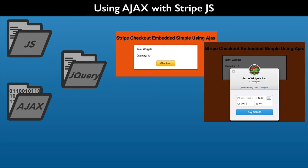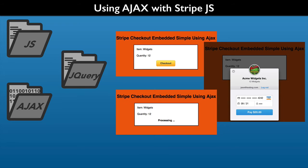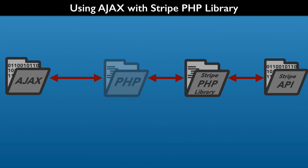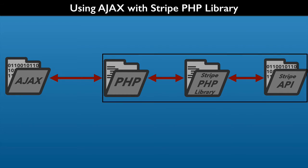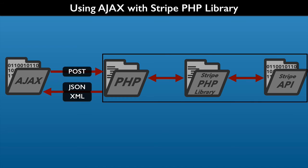That lets us take advantage of Ajax. For example, we can communicate with our server to complete the charge. We can also change the UI messaging while that occurs — for example, displaying a processing message while the charge is completing. With Ajax, we can create our own PHP services that use Stripe independent of our UI. This architecture is the foundation for decoupling the UI and the backend transaction processing, giving you flexibility on how to send and receive data between the UI and the services that we create.